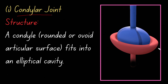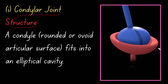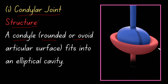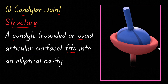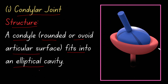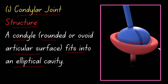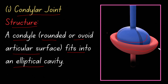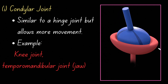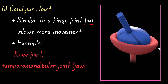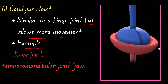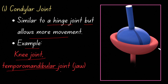A condylar joint has a rounded or ovoid articular surface (condyle) that fits into an elliptical cavity. The movement is similar to a hinge joint but allows more movement. Examples include the knee joint and the temporomandibular joint.